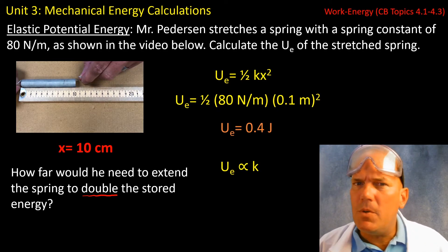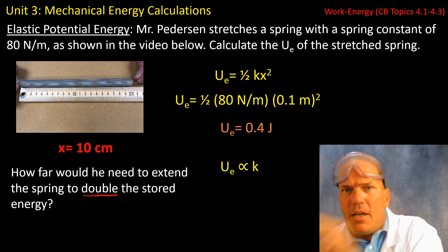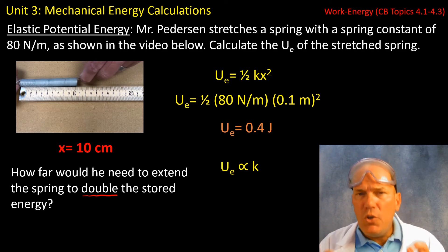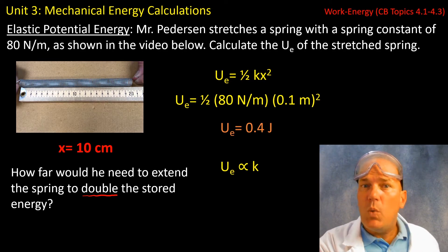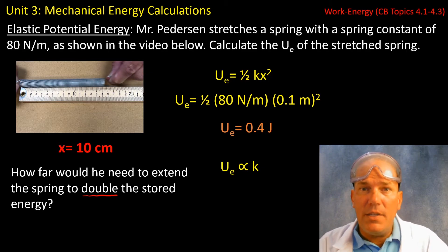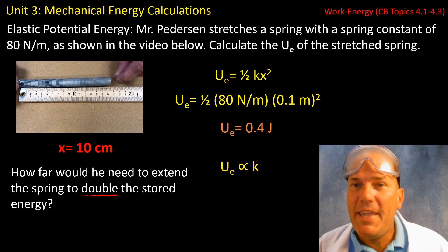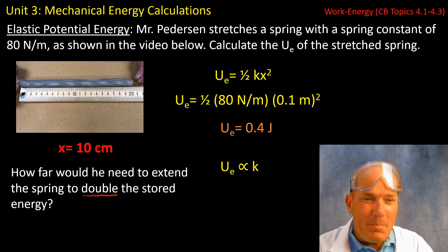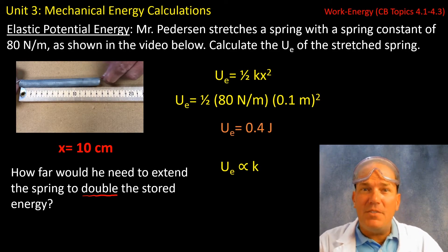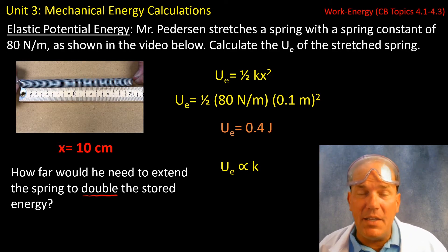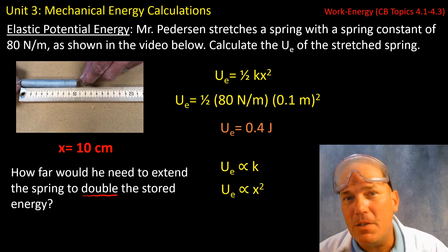But in order to double k, I would need to take my spring, put it away, get another spring with a spring constant of 160 newtons per meter, and that will give me twice the energy as long as I extend it 10 centimeters or 0.1 meters. But we can't do that in this problem because I'm extending this same spring. It specifically says how much further would I need to extend it if I wanted to double the stored energy.